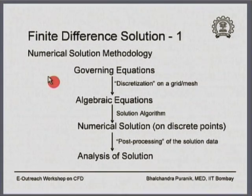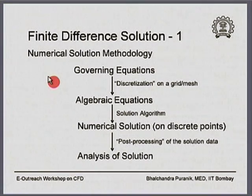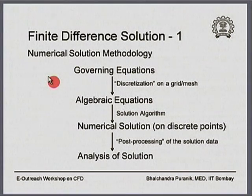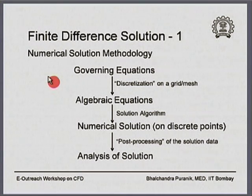The process of converting the governing equations into algebraic equations is called discretization. This discretization is usually carried out on a computational mesh or computational grid. There are different methods of discretization — different ways to achieve algebraic equations from the governing partial differential equations. The first classic method is called finite differencing, which we will discuss in today's and tomorrow's session.